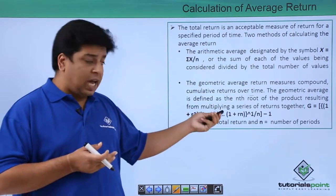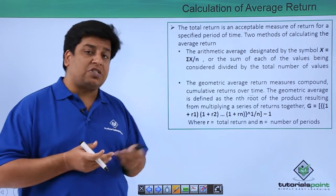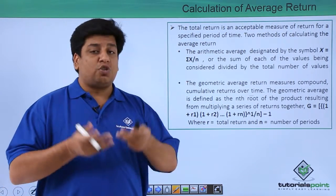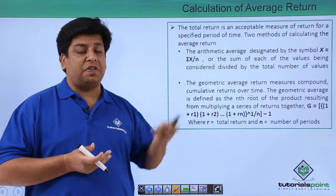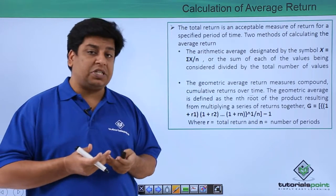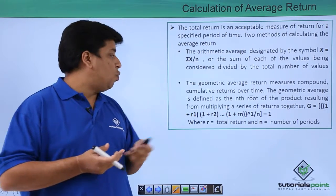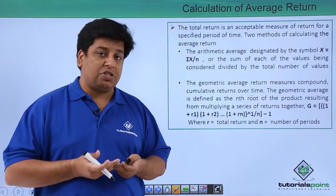So here, as we discussed, r is the total return and n is the number of periods. These are the two techniques to calculate your average return. First, as we discussed, arithmetic average return, and second, the geometric average return.